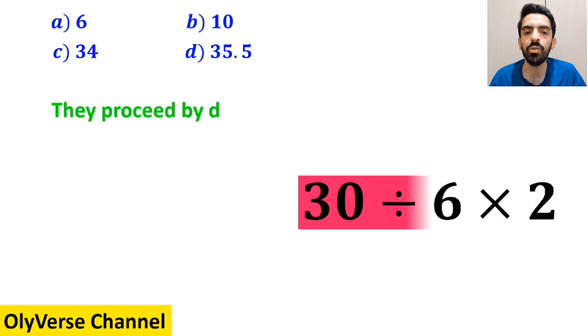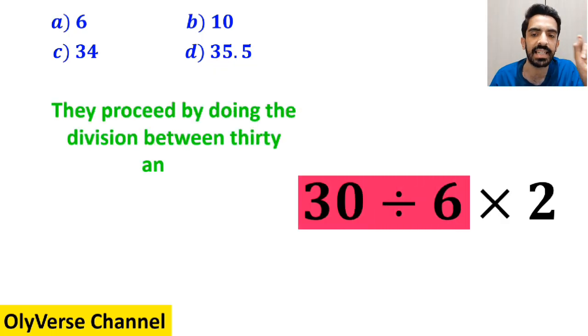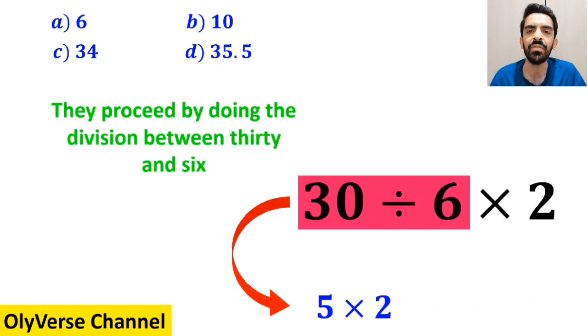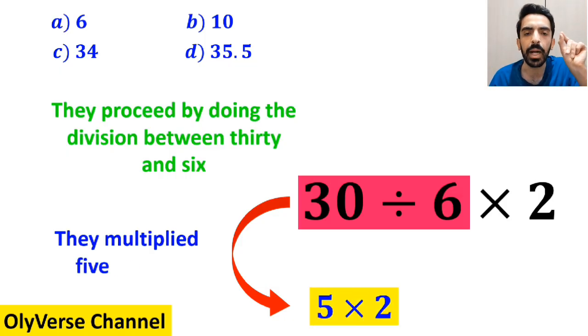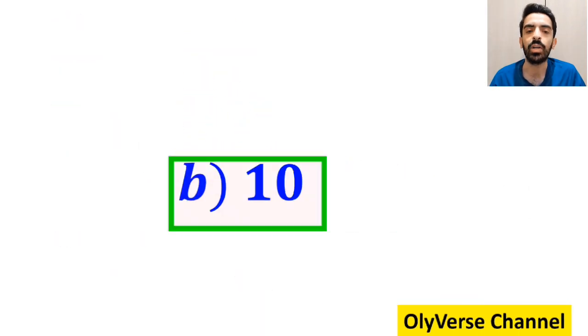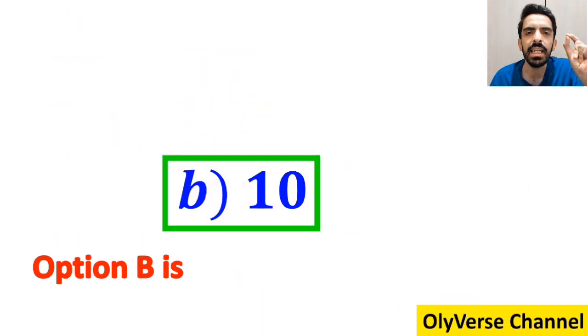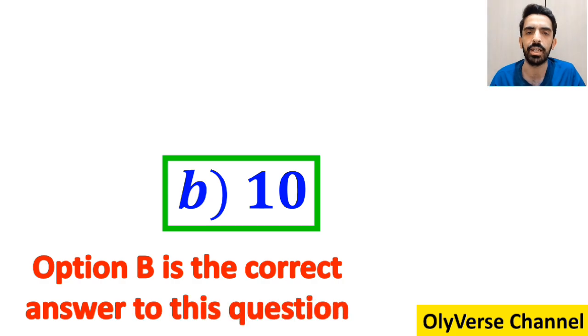Then they proceed by doing the division between 30 and 6, which gives them 5 times 2. And finally, they multiply 5 by 2, which ends up with the answer 10. Then, without any hesitation, they quickly say that option B is the correct answer to this question. But that's definitely wrong.